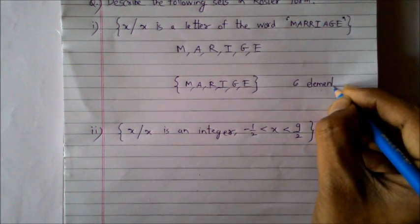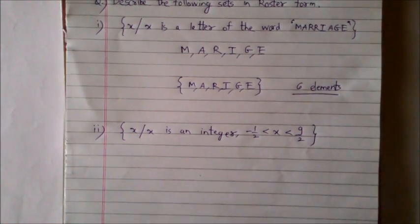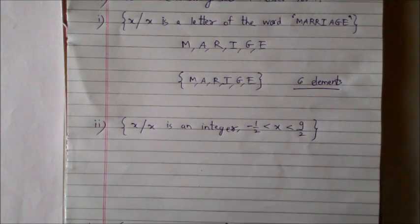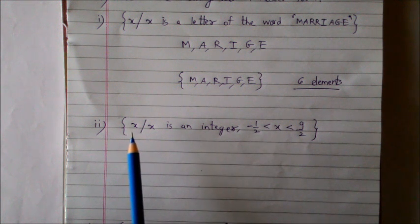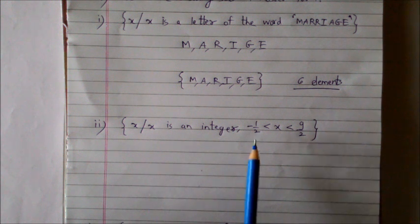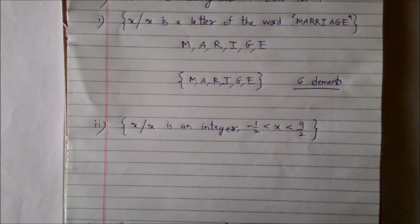So it is a finite set. Note that the elements of this set are not numbers but letters. Now let's move on to another problem which says write this set in the roster form: the set of all x such that x is an integer which lies between minus one by two and nine by two.